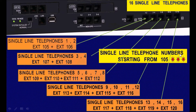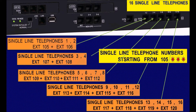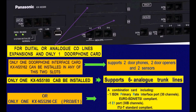Single line telephone numbers start from 105 by default if we select extension numbering starting from 101. If during initial settings we select extension numbers starting from 201, then single line phones will start from 205. Extensions 101 to 104 are the four digital extensions, as mentioned.